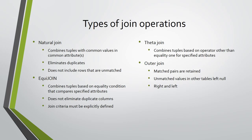The theta join operation combines relations based on criteria on specified attributes of each relation using criteria other than the equality one. The outer join includes also unmatched tuples from the participating relations, combining them with null values in the attributes of the other relation. The left outer join combines unmatched tuples with null values only from the left relation; unmatched tuples from the right relation do not appear in the result. Similarly, the right outer join combines unmatched tuples with null values only from the right relation, while unmatched tuples from the left relation do not appear in the result.